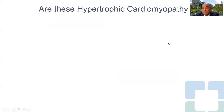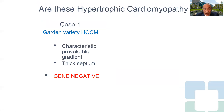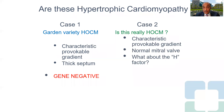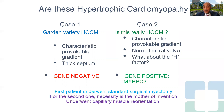Are these both HCM? The first is a garden variety of hypertrophic obstructive cardiomyopathy with a thick septum and provocable gradient — that patient was gene negative for HCM. For case two, the patient does have a characteristic provocable gradient, but the mitral valve is normal and there is no hypertrophy — yet this patient was gene positive for HCM. The first patient underwent standard surgical myectomy, but for the second, necessity is the mother of invention, and this patient underwent papillary muscle reorientation.